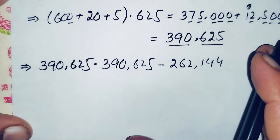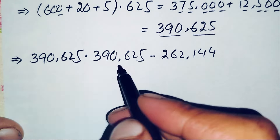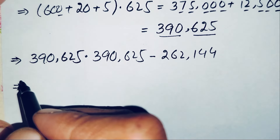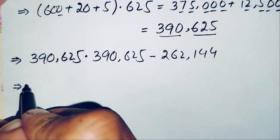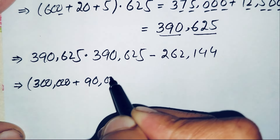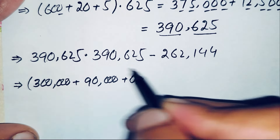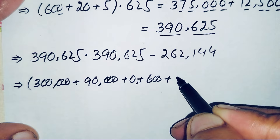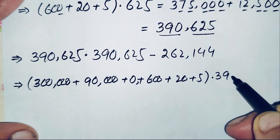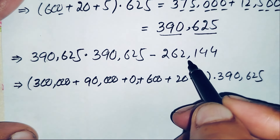To multiply 390,625 by 390,625 without a calculator, we decompose 390,625 into 300,000 plus 90,000 plus 600 plus 20 plus 5, and multiply each part by 390,625. First we multiply, and in the last step we will subtract 262,144 from the result.